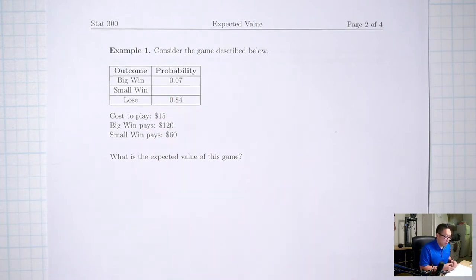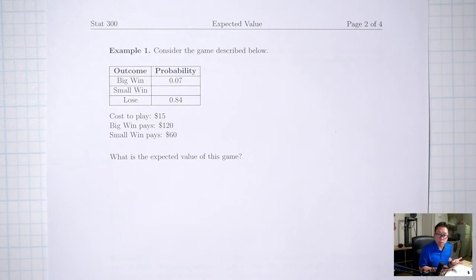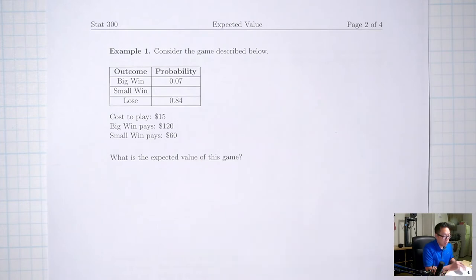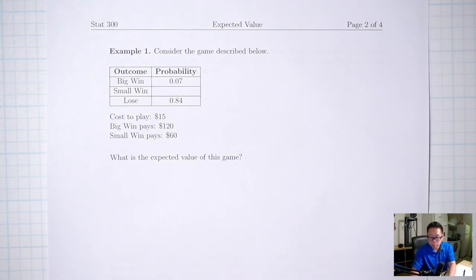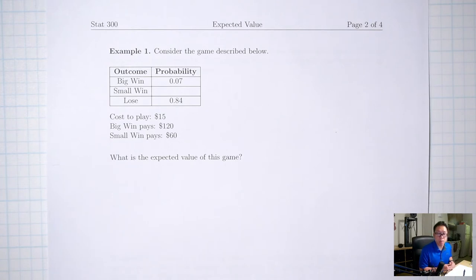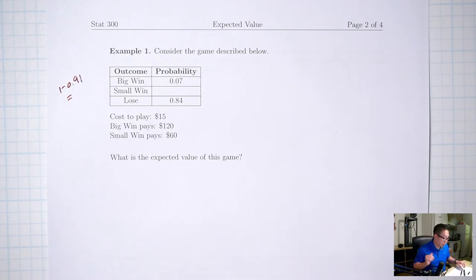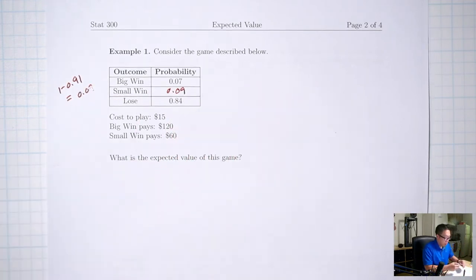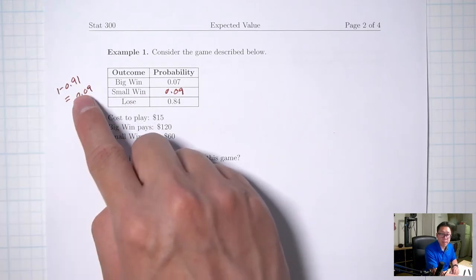One fact about probability is that all probabilities must add up to 100%, or as a decimal, one. So add up what you have: 0.07 plus 0.84 equals 0.91. Then do 1 minus 0.91 to get the missing number, which is 0.09.